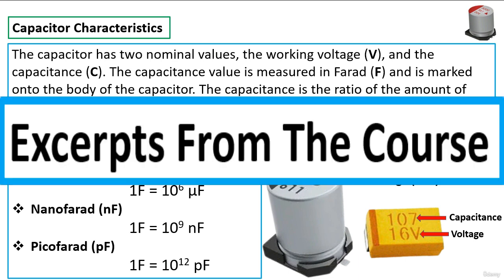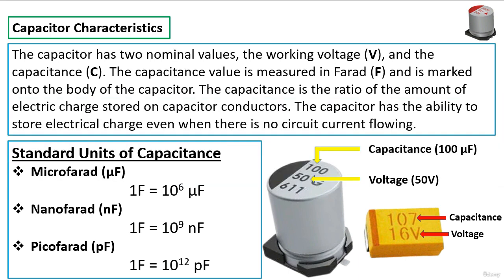The capacitance C, the capacitance value is measured in Farad F and is marked onto the body of the capacitor. As you can see here, this is the capacitor here. This is an electrolytic capacitor. And here we have a tantalum capacitor.